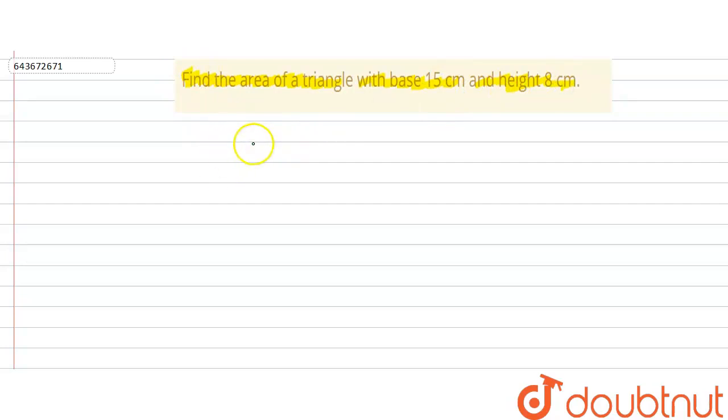We know that the area of a triangle is given by: area of triangle equals half times base times height.